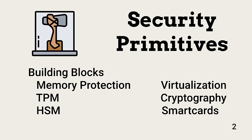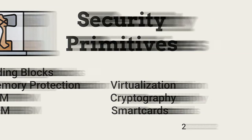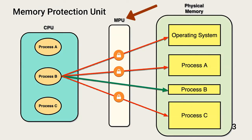Let's take a look at each. A memory protection unit, or MPU, manages the areas of memory that a process can access. In this example, process B can only access the memory allocated to it. This prevents processes, including compromised applications, from accessing sensitive data used by other processes.